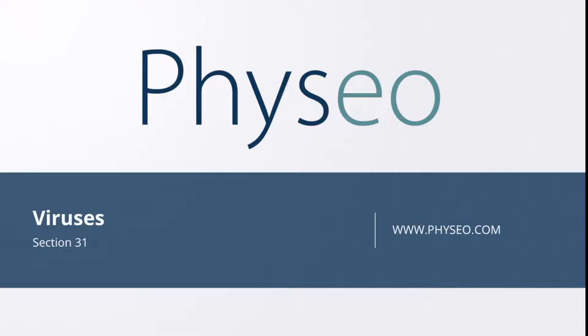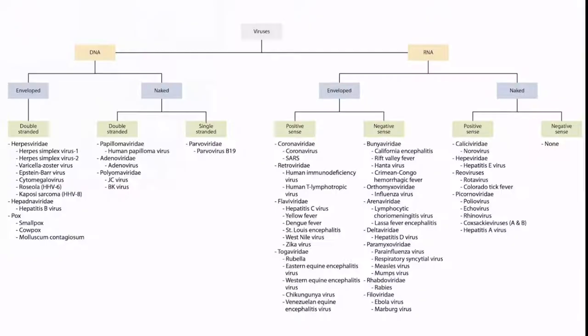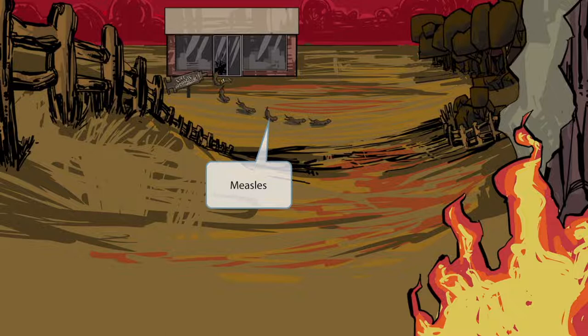Welcome to section 31 of the viruses. This is an overview image of the viruses that you need to know for step one. In this lecture, we will discuss measles. Our measles story takes place outside in the park. See all these weasels fleeing this little store? They're fleeing because they started a fire, leading to lots of chaos. Weasels represents measles, so whenever you see weasels, think of measles.